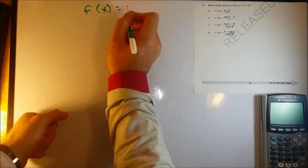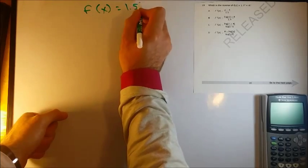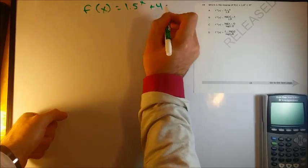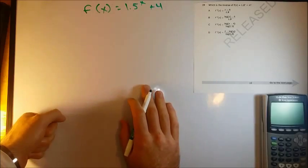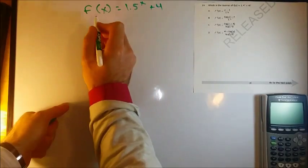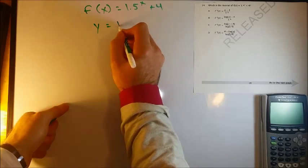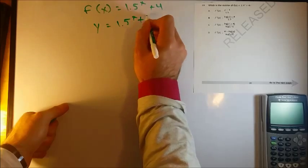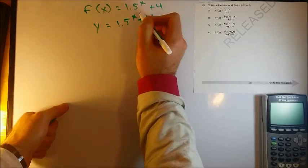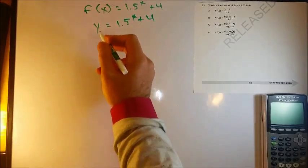So we've got f of x equals 1.5 to the x plus 4. So when we're solving inverse functions, the first thing we want to do is let's just change f of x to y. That's going to make it easier to work with. So we get y equals 1.5^x plus 4.